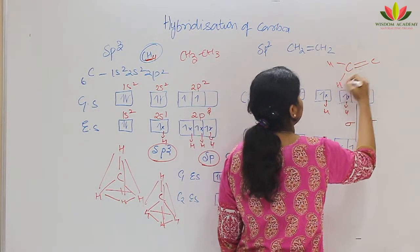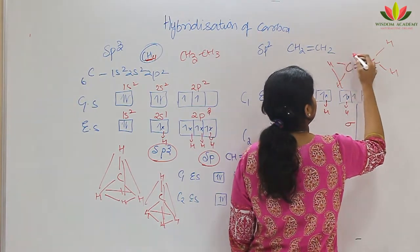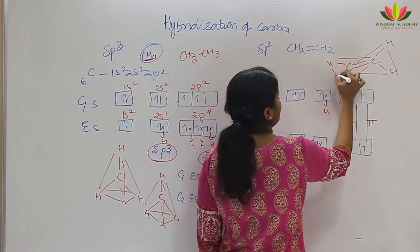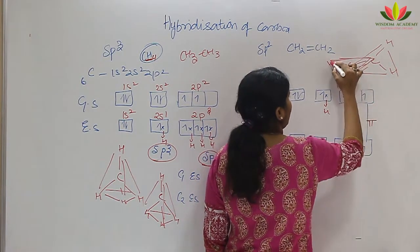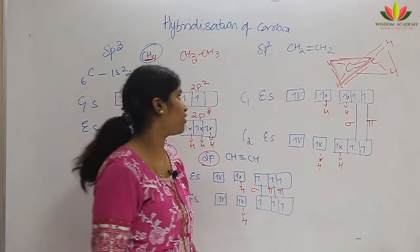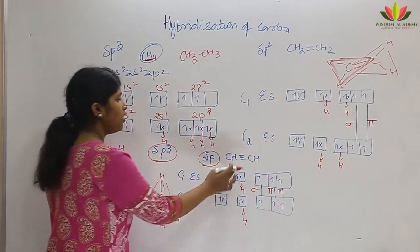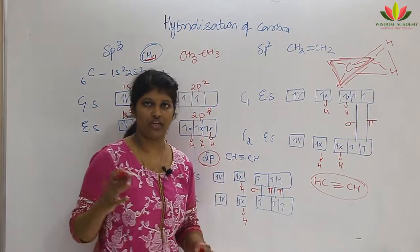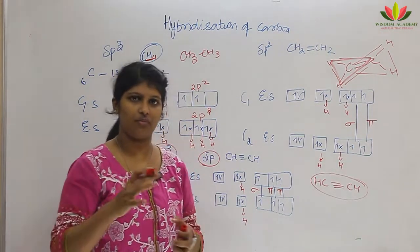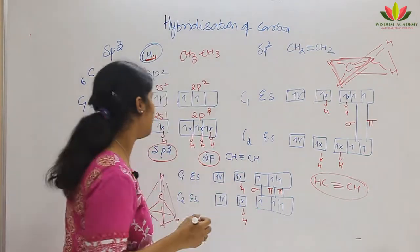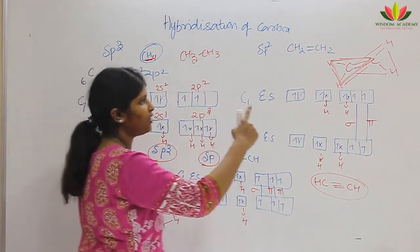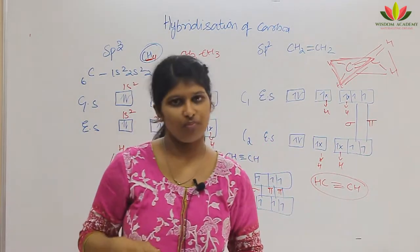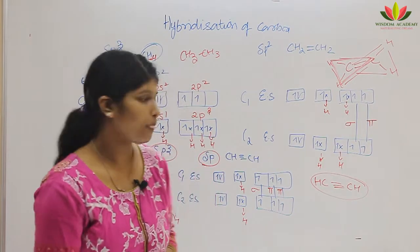For sp2, each carbon has a trigonal planar shape — it is triangular, so it is called trigonal planar. For sp, the shape is linear, meaning there is no deviation from the plane. So in summary: sp3 is tetrahedral, sp2 is trigonal planar, and sp is linear. These shapes apply to all hybridized carbons.